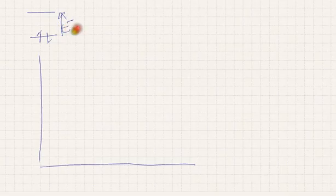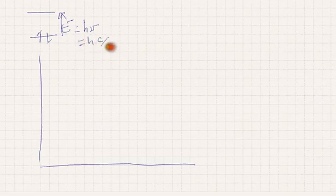The gap that it jumps is equal to the energy, E = h times frequency, which equals h times c over wavelength. The wavelength is usually measured in nanometers.